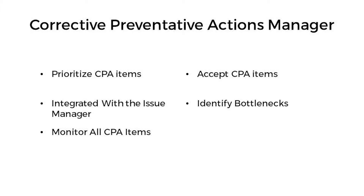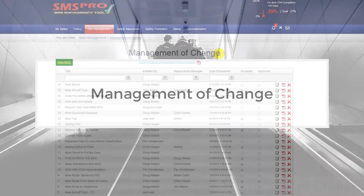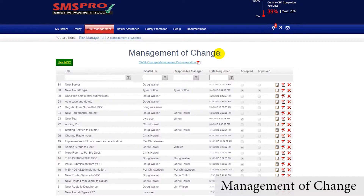The CPA Manager allows managers to monitor all corrective actions progress and identify bottlenecks that prevent issues from meeting their targeted closure dates. The first tool we'll look at is the MOC module, which is used when managers need to manage change. In the MOC module, managers can add a new MOC item for review, edit, or delete existing MOC items.